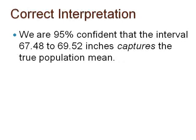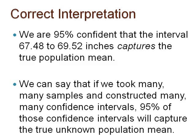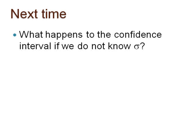Here they are again: we are 95% confident that the interval 67.48 to 69.52 inches captures the true population mean. If we took many, many samples and constructed many, many confidence intervals, 95% of those confidence intervals will capture the true unknown population mean. Pause here to compare your written interpretation to the correct and incorrect interpretations presented here. So far, you have learned many concepts and ideas about confidence intervals constructed to estimate the population mean mu. In the next video, we will find out what happens to the construction of a confidence interval when we do not make the unrealistic assumption of knowing the population's standard deviation. Thank you.